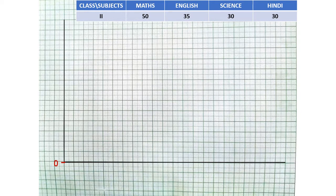Now on this vertical line, we will mark number of students at an equal interval. If we are taking an interval of 10 students on each unit, we will write here 10, then 20, then 30, 40, 50 and 60. As you can see, there are 10 students on each unit — on one unit we have 10 students.